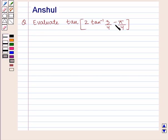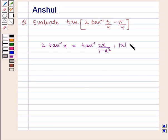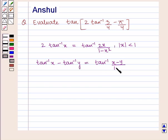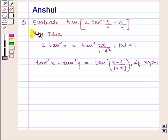We know that 2 tan inverse of x is equal to tan inverse of 2x upon 1 minus x square, where modulus of x is less than 1. Also, tan inverse of x minus tan inverse of y is equal to tan inverse of x minus y upon 1 plus xy, if xy is greater than minus 1. With this key idea we shall proceed with the solution.